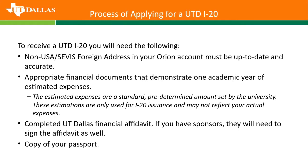You also need to provide the appropriate financial documents. We do have to see one year of living expenses and tuition — that's an academic year. If you're joining in the spring, that will be spring plus fall, or fall plus spring if you're coming in August. This is an estimated cost of expenses, looking at your tuition estimation and general cost of living: transportation, health insurance, books, and those kinds of expenses. It's not actually what you pay to UT Dallas, but it's what you need to cover expenses throughout your academic year.